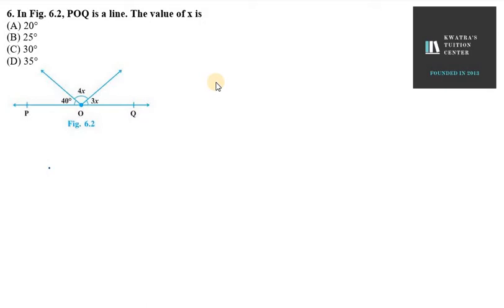So, what do you use? You use the property of the linear pair. Now, what happens in the linear pair? When you sum all the angles, their sum equals 180 degrees.